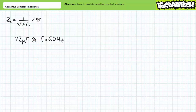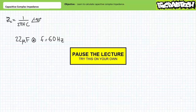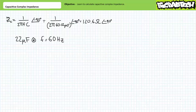As an illustrated example of the capacitive complex impedance formula, consider a 22 microfarad capacitor subjected to sinusoidal AC with a frequency of 60 hertz. Let's calculate the complex impedance of this capacitor, expressing our final answer using polar format. By all means, follow along. When we substitute our given values into the capacitive complex impedance formula, we arrive at an impedance value of 120.6 ohms at an angle of negative 90 degrees.